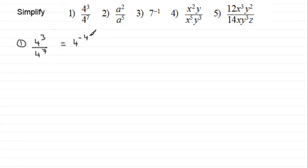so that's 4 to the power minus 4. But if we're simplifying this, the aim is not to leave it with a negative power. So 4 to the power minus 4 is the same as 1 divided by 4 to the power 4.